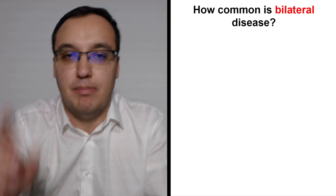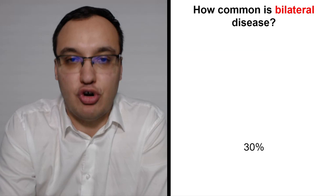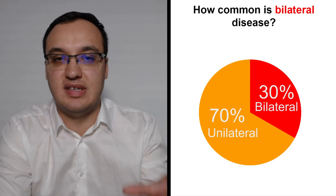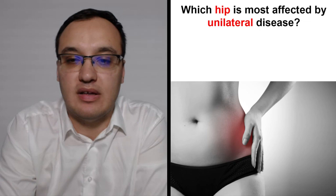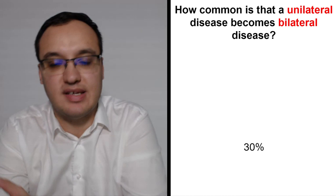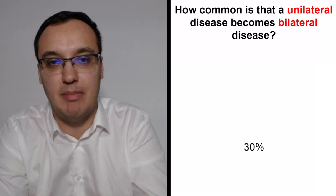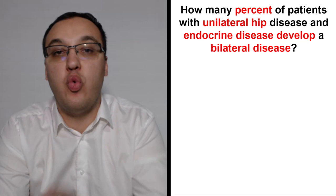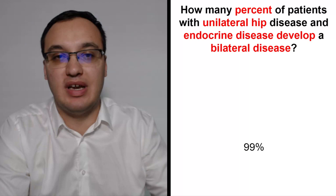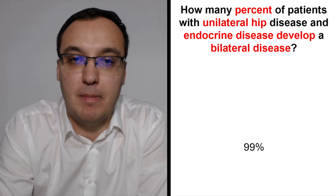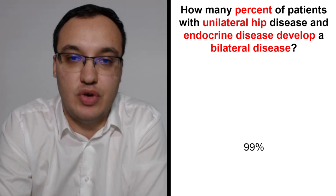Bilateral disease occurs in about 30% of all patients; most cases are unilateral. The left hip is most commonly affected in unilateral disease. One-third of unilateral patients will eventually develop bilateral disease. In patients with unilateral disease and an underlying endocrine condition, almost 100% will develop bilateral involvement.